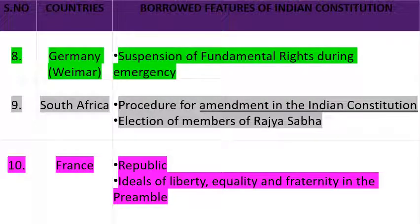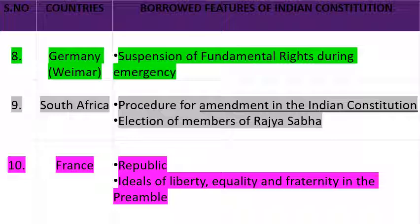Next है Germany। Germany के constitution से क्या borrow किया गया है? Suspension of Fundamental Rights During Emergency — अगर country में emergency की situation है, यानि आपात की स्थिति आ गई है देश में — कहीं कोई war हो गया है या कोई state constitution के according नहीं चल रही है — तो वहाँ पर जो fundamental rights हैं, वो suspend कर दिए जाएंगे। यह provision Germany के constitution से लिया गया है।